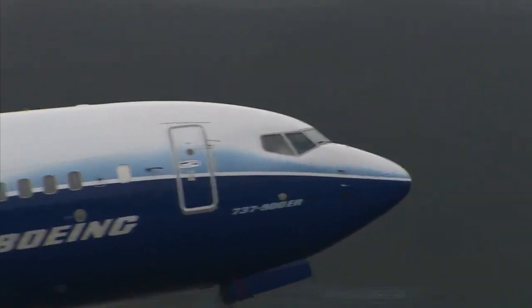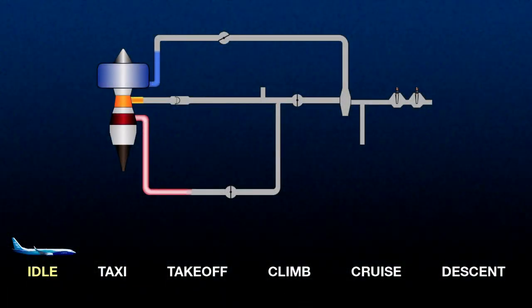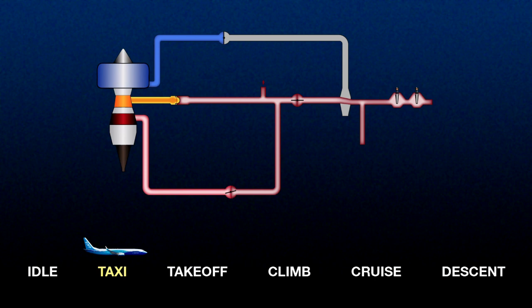Now let's see how the bleed air system operates during a typical flight. At ground idle, since the engine speed is low, the HSV is open and the system is running on 9th stage air. At these low pressures, the PRSOV is also wide open. The temperature is usually low enough that the PCCV is closed. At taxi, the high stage system continues to supply the bleed air. Depending on throttle setting, the pressure may rise above 32 PSI, and the HSV will act to regulate it to 32 PSI. Depending on throttle setting, the bleed air temperature may also rise above 390 degrees Fahrenheit, and the PCCV will open to keep the bleed air at 390 degrees or below.